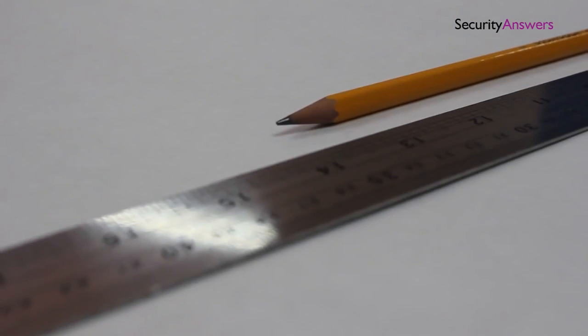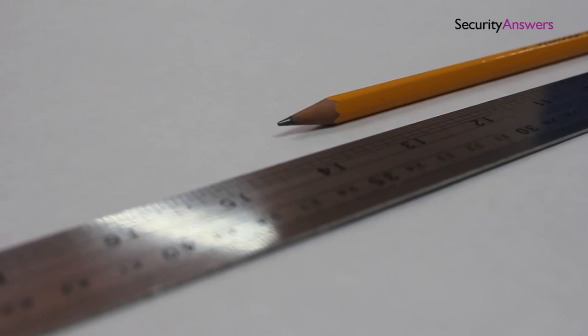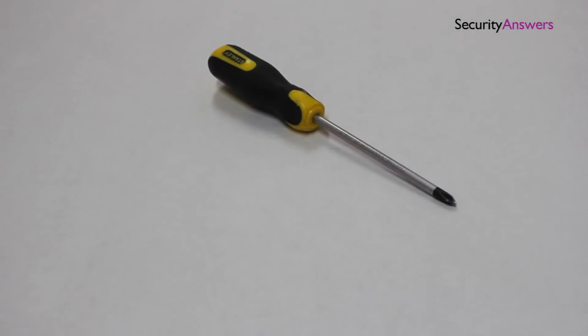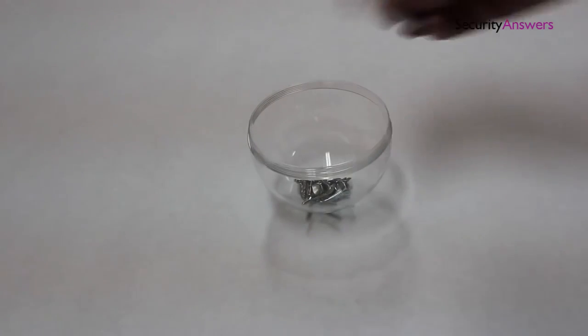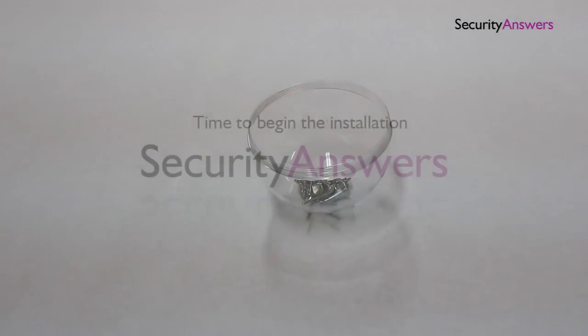A ruler and pencil for marking the position of the locks. A Phillips screwdriver. Each lock should come with all the correct screws for a proper installation. We place our screws in a small container to ensure we do not misplace any of the components.